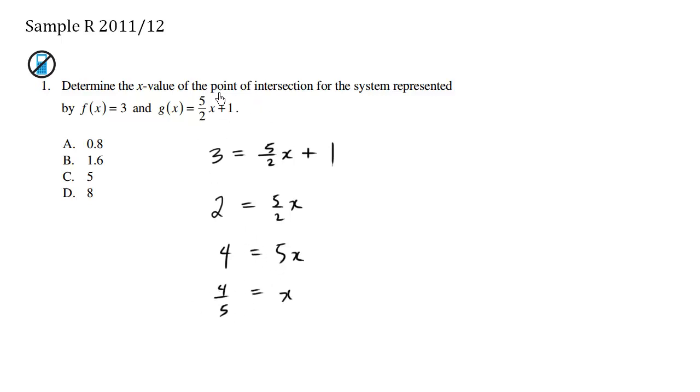The point of intersection for the x-value is going to be 4/5, which is 0.8. So the answer here is A.